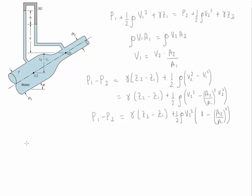We can also obtain this pressure difference using hydrostatic pressure distribution. Starting from point 2, P1 equals P2 minus gamma of water times distance L (going upward), minus gamma of oil times H (going upward through the manometer), plus gamma of water times (H plus L plus Z2 minus Z1) going downward back to point 1.